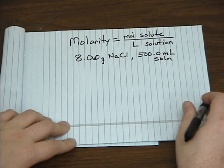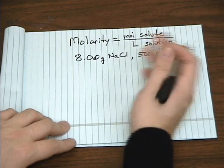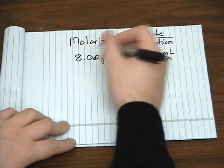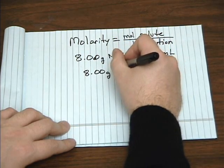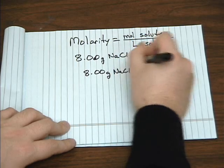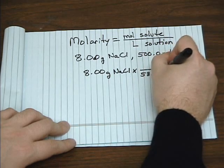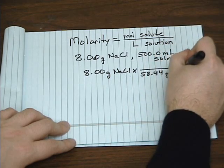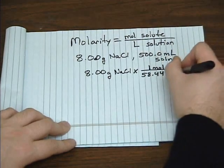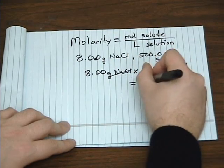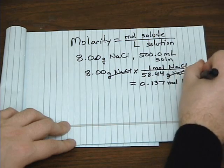A couple things you have to do to calculate the molarity of this solution. First, you have to convert grams to moles. In previous videos, we've done several calculations that involve gram-to-mole conversions. Remember, to go between grams and moles, you use molar mass. So for sodium chloride, the molar mass is 58.44 grams per mole, which gives us 0.137 moles of the compound.